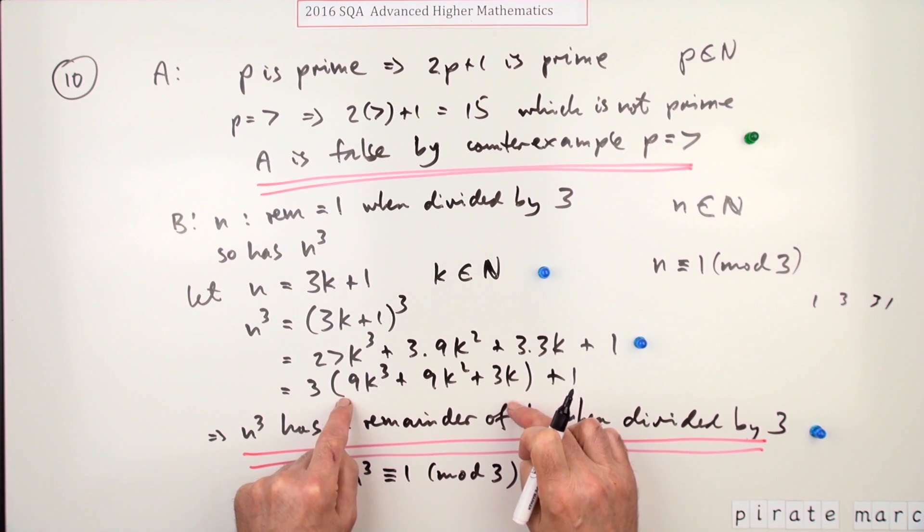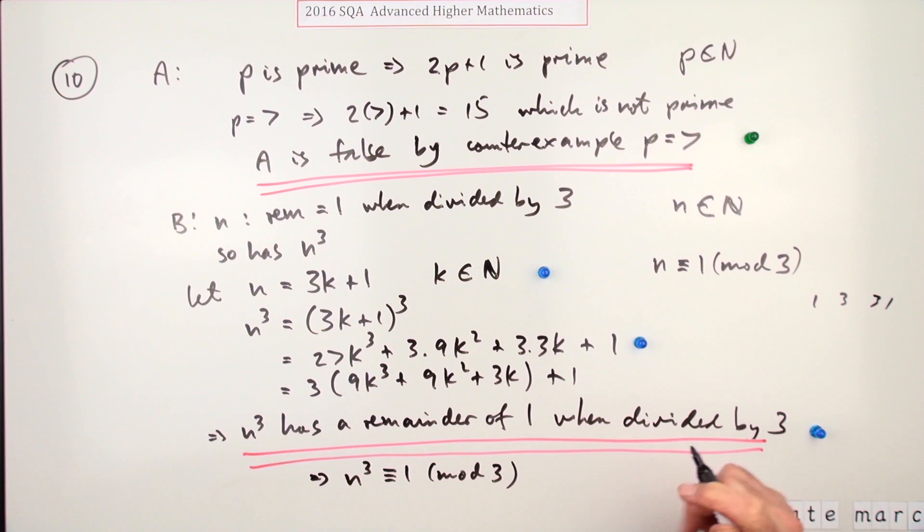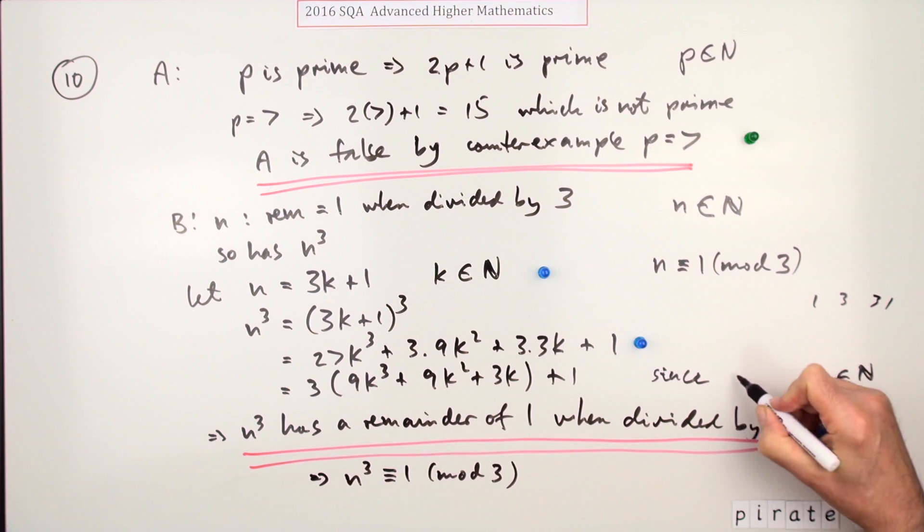So really I should say has a remainder of one when divided by three since this part is a natural number - since 9k³ + 9k² + 3k is a natural number - because that wouldn't be true if this was some rational number, some fraction or other. But again, they're not interested in you writing this down for a mark.